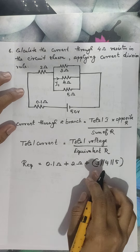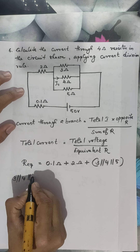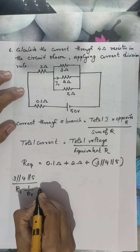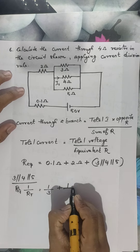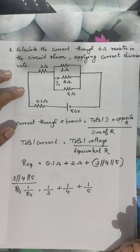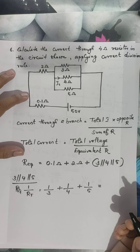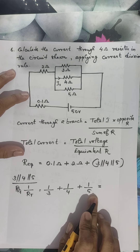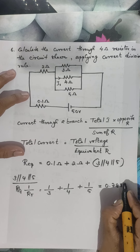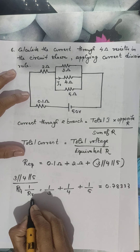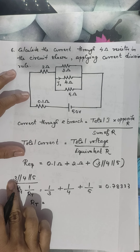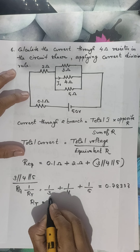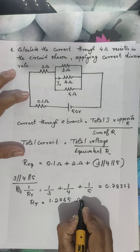Let us calculate the equivalent resistance of 3 parallel to 4 parallel to 5. We know: 1 divided by R equivalent equals 1/R1 plus 1/R2 plus 1/R3, so that is 1/3 plus 1/4 plus 1/5, which gives 0.78333. That is 1/R total, so R total — the equivalent resistance of the parallel combination of 3, 4, and 5 ohm — is the reciprocal, which is 1.2765 ohm.